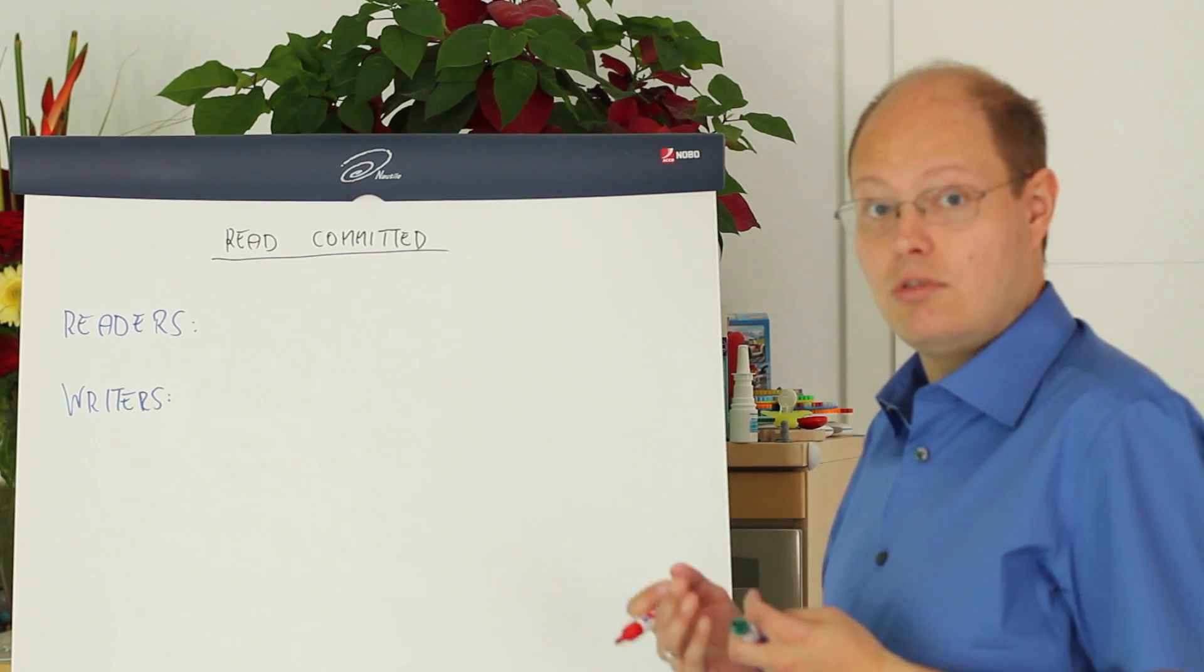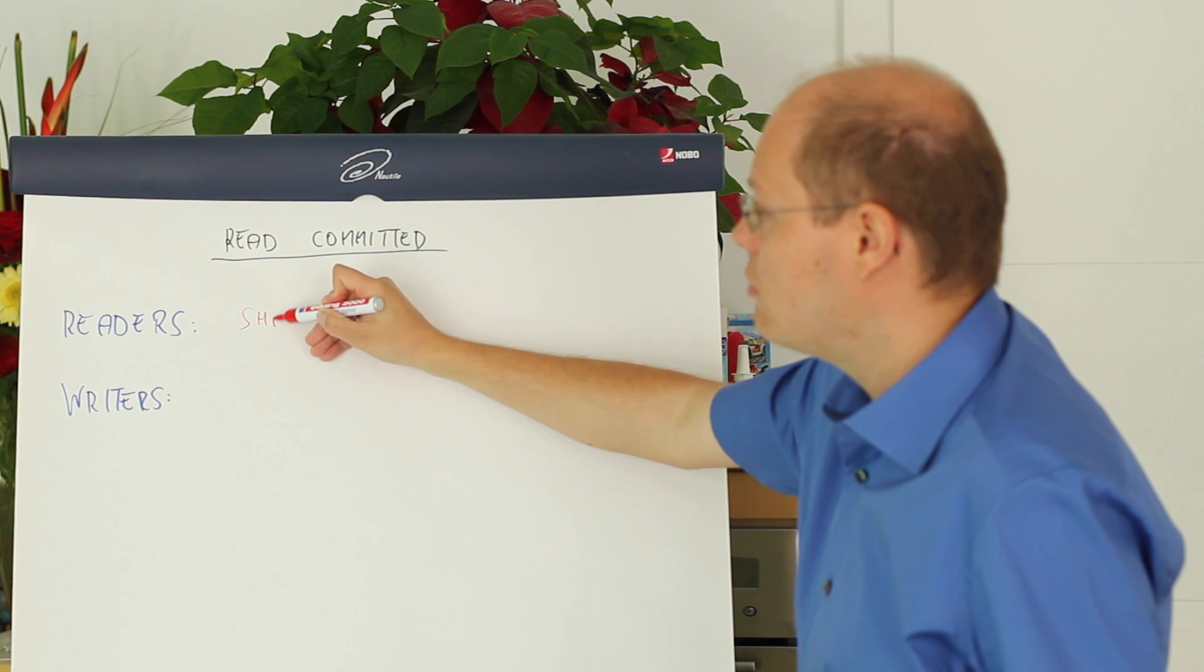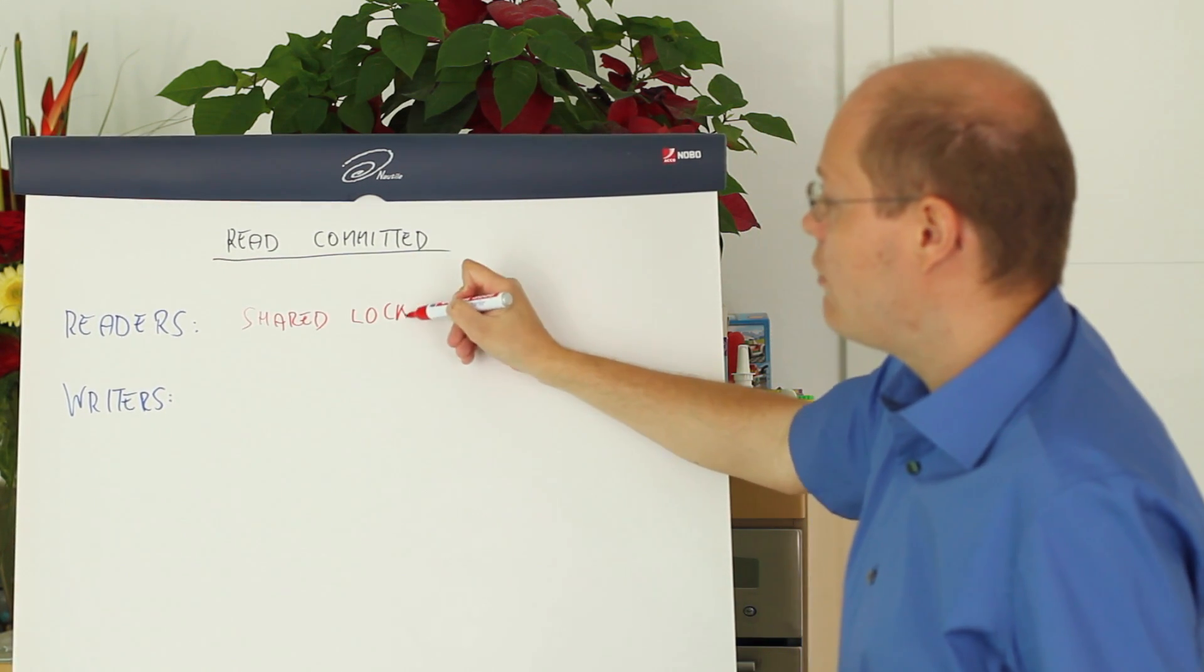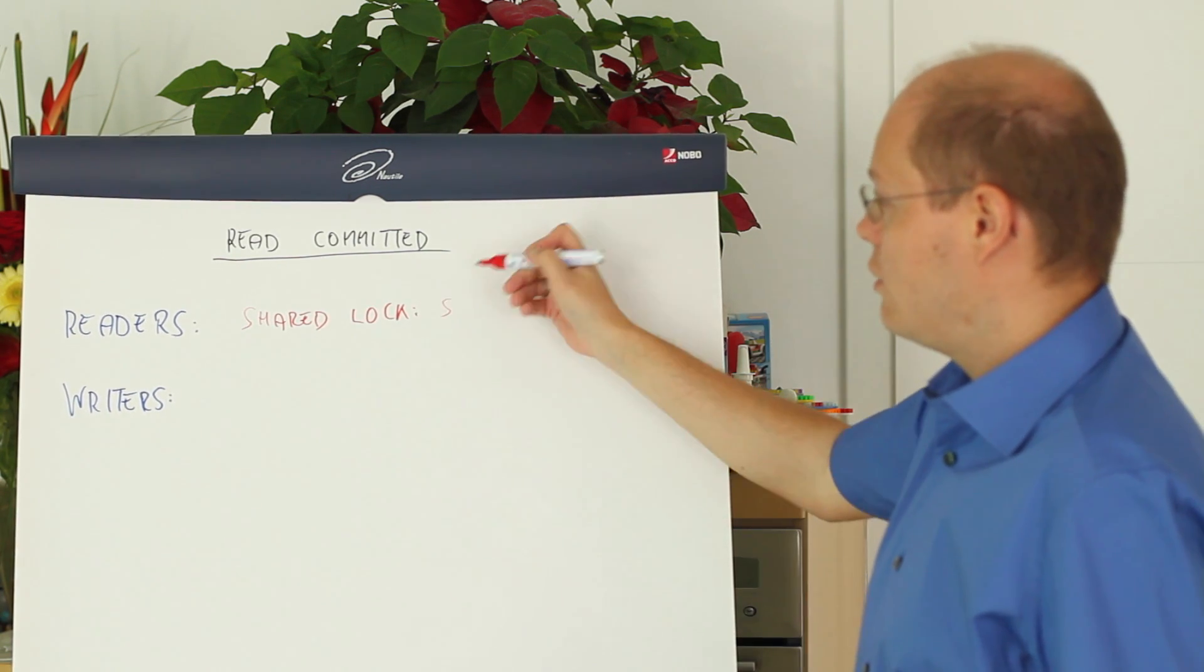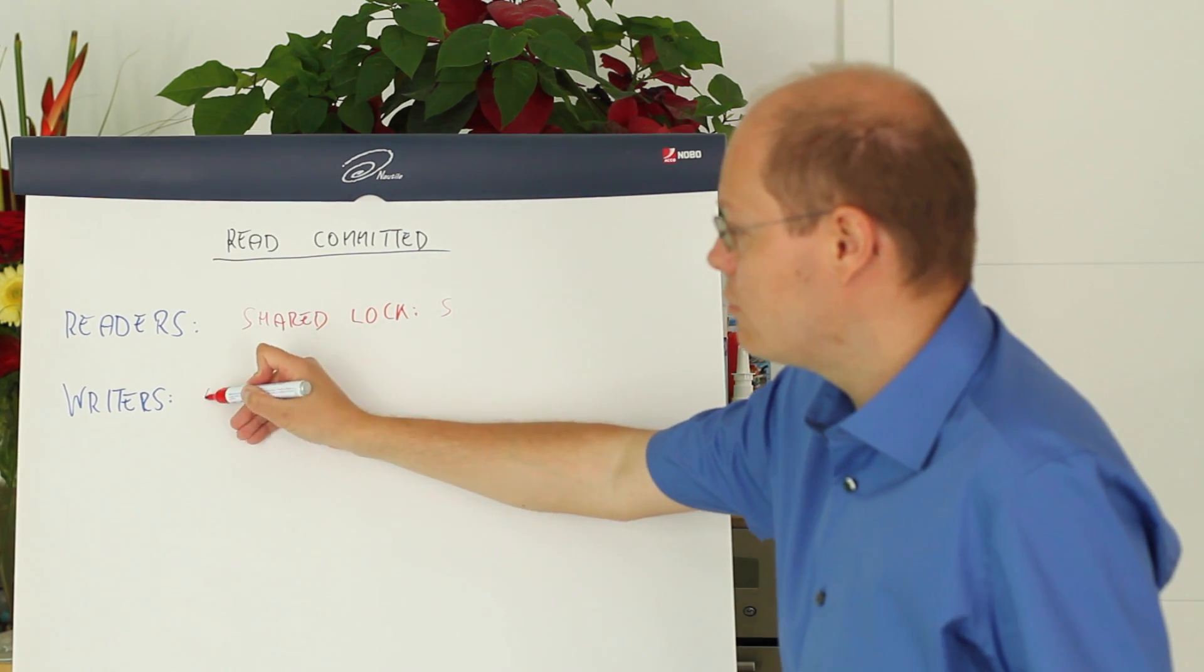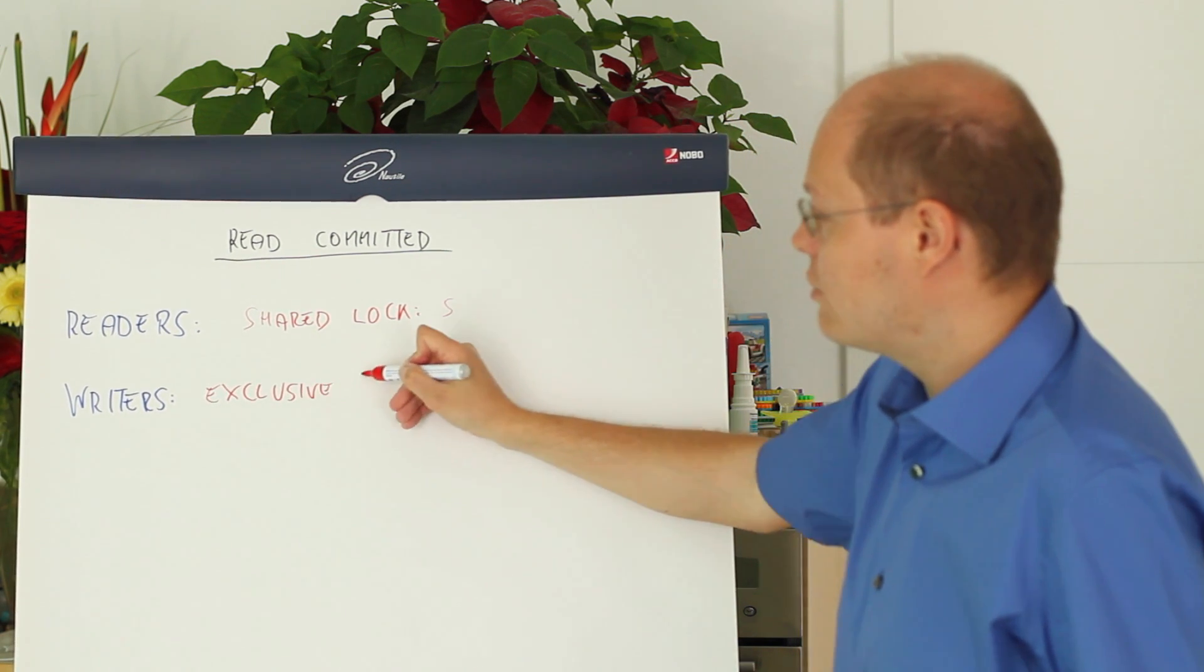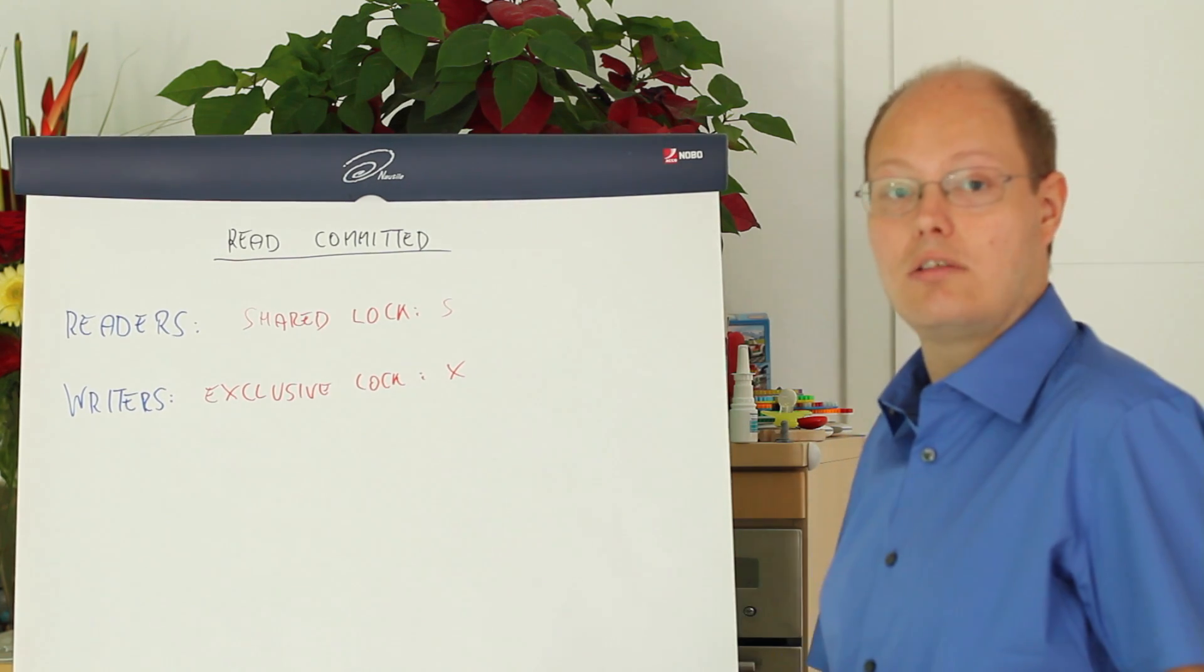A reader in SQL Server by default always acquires a so-called shared lock. Means when you read a record you acquire a shared lock or a so-called S lock on that specific record. When we change records SQL Server acquires a so-called exclusive lock, an X lock on that specific record.